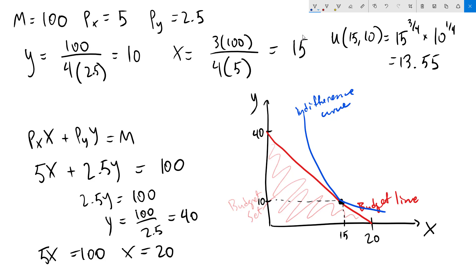This means the particular indifference curve we are on is the one for u equals 13.55. Of course, that number by itself doesn't really mean anything. It just means that all of the bundles on this indifference curve give us the same utility of 13.55.